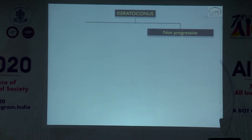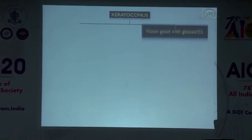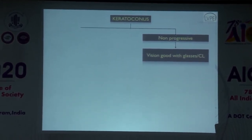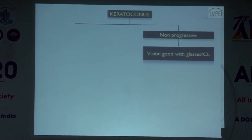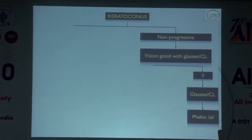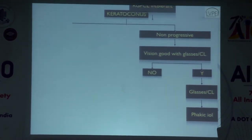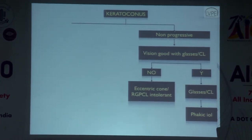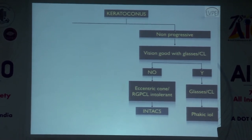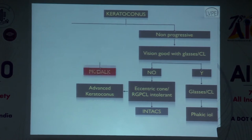For progressive keratoconus with good pachymetry, collagen cross-linking with PRK is an option. For surgical planning in DALK, it is important to know if the endothelium is normal — keratoconus tends to have lower cell counts, especially with a history of hydrops. You need to know the depth of scarring (slit lamp usually suffices), whether dissection is feasible, and previous cross-linking history, which affects bubble formation and the choice of dissection technique.